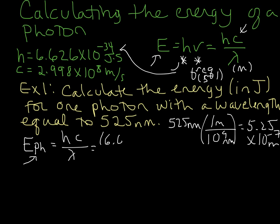So 6.626 times 10 to the negative 34 joule seconds. Actually, let's go ahead and corral this off so it doesn't get in our way. And so that's Planck's constant. We're going to multiply that by 2.998 times 10 to the eighth meters per second, the speed of light.